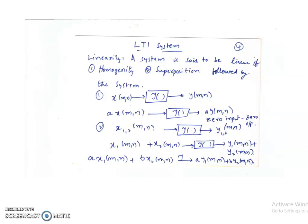What is superposition? If input x₁(n) produces output y₁(n), and input x₂(n) produces output y₂(n), then applying x₁(n) plus x₂(n) should produce y₁(n) plus y₂(n). Combining both properties, we can write: a·x₁(n) + b·x₂(n) should result in a·y₁(n) + b·y₂(n).